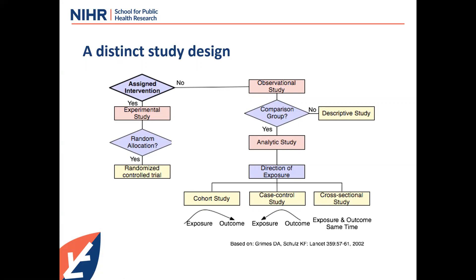Looking at where to place this design: is the intervention assigned? If yes we move to experimental studies; if no, observational studies. The natural or quasi-experiment sits in the middle — it has both properties of an experimental study and properties of an observational study. In terms of the potential to make causal claims, it sits somewhere between an observational study and a randomized control trial, which is quite a strength in terms of how you interpret results.